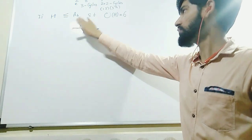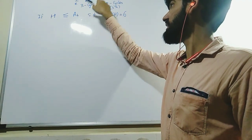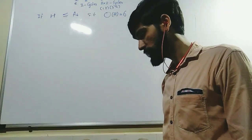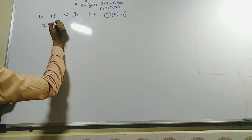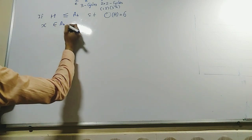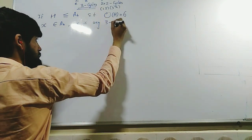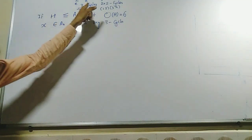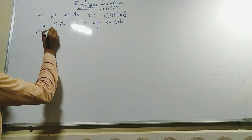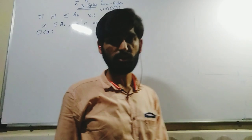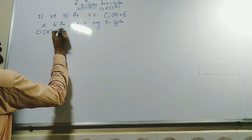We have H as a subgroup of A4 which is of order 6. In A4 we have 12 elements: the identity, 8 three-cycles, and 3 double transpositions. I consider any element x which is an element of A4 and which is any 3-cycle — any 3-cycle out of these 8. Since it is a 3-cycle, the order of x must be equal to 3, because any n-cycle has order n.